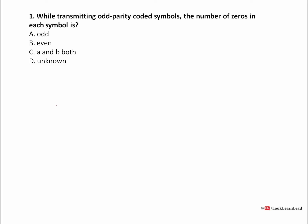Before going to this, let's see what parity is. Suppose we have 1, 0, 1, 1. For parity we count the number of ones — here we have three ones, so this is odd. If we have 1, 0, 1, 1, 1, we would call it even because the number of ones is even. So for both cases we are calculating the number of ones, not zeros.